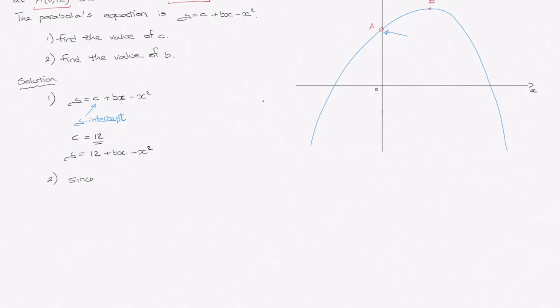Well, since we know that B has coordinates 2, 16, that must mean that if I replace x by 2 and y by 16 inside the equation y equals 12 plus bx minus x squared, if I replace x by 2 and y by 16, well, I'll end up with an equation for b. So let's go ahead and do that.